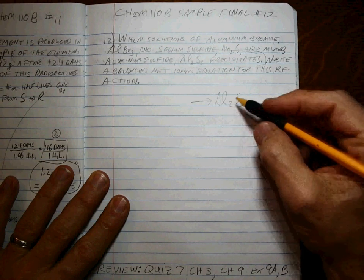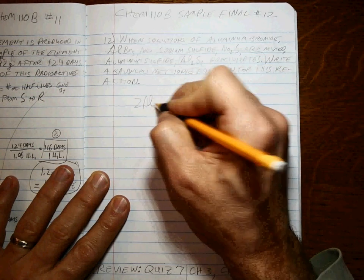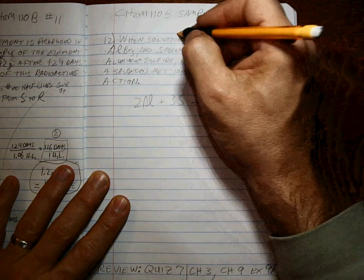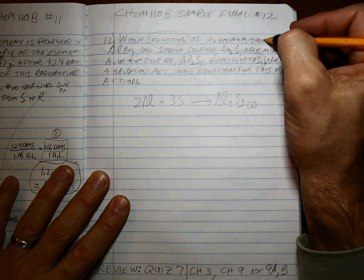What's that come from? Well, it comes from two Al's plus three sulfurs, right? But remember, these come from solutions of these ionic compounds.